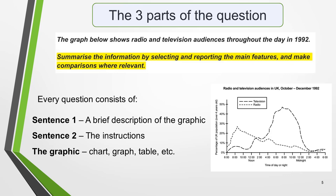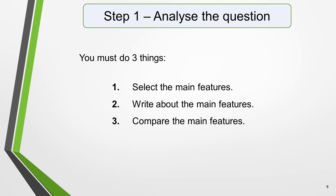The format of every academic Task 1 question is the same. Every question consists of sentence 1, which is a brief description of the graphic, and sentence 2, which is the instructions, and the graphic itself — be it a chart, graph, table, etc. Sentence 2 tells you what you have to do. You must do three things: 1) select the main features, 2) write about the main features, and 3) compare the main features.